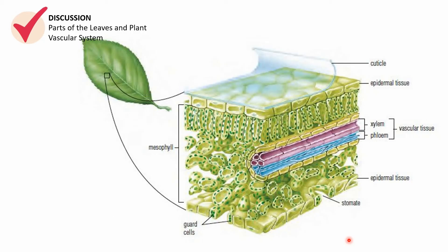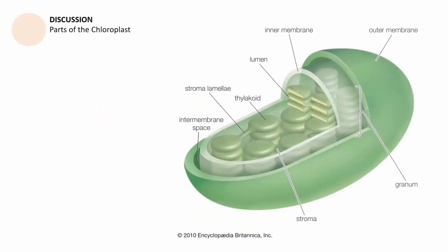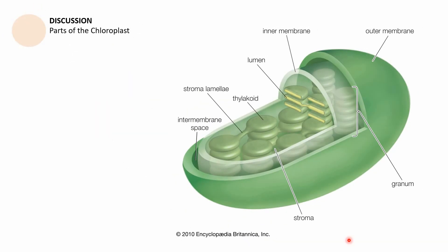We are done with the second part of this video — a discussion about the parts of the leaves and the plant vascular system. Let us now proceed to the last part of this video, which covers the parts of the chloroplast.